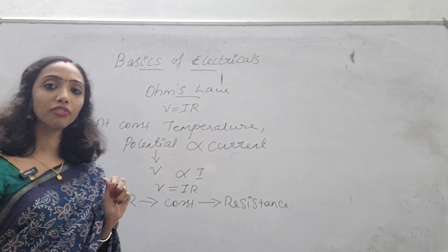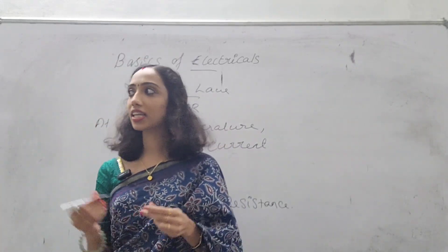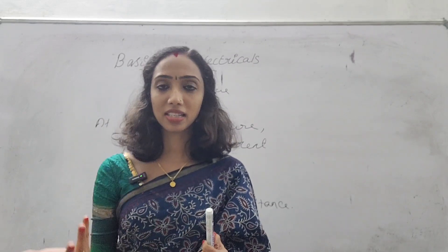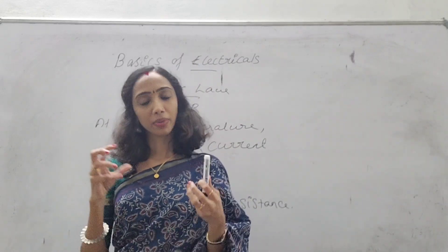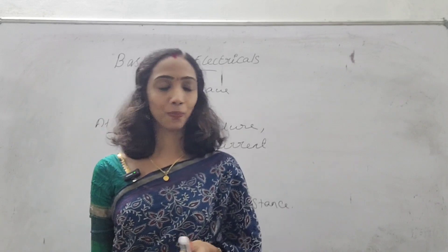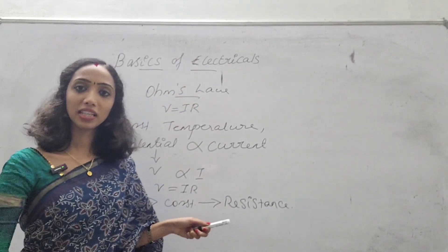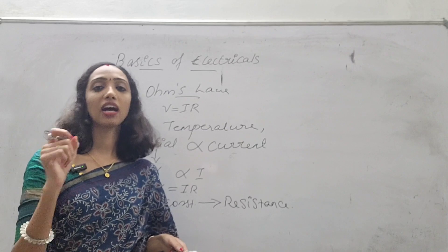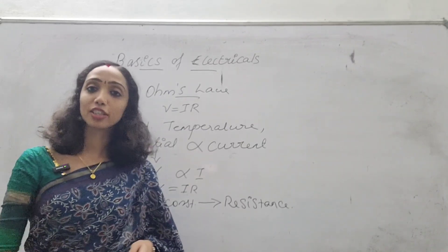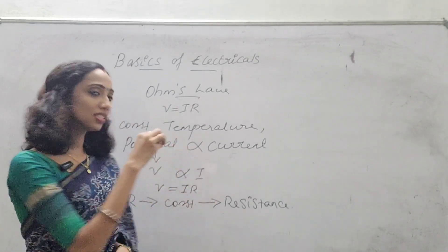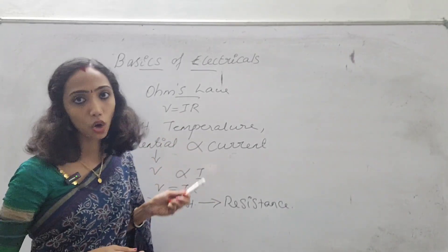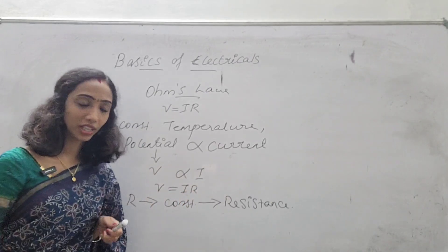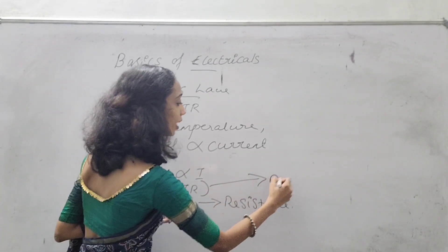Resistance is opposition offered to the flow of current. Resistance is a material that opposes the flow of current. That resistance is the constant used here in every Ohm's Law. That is V proportional to I, that is V is equal to I into R. This V is equal to I into R is called Ohm's Law.